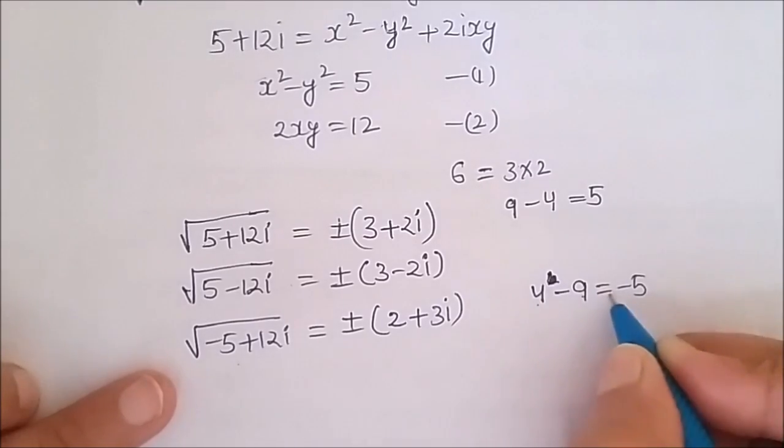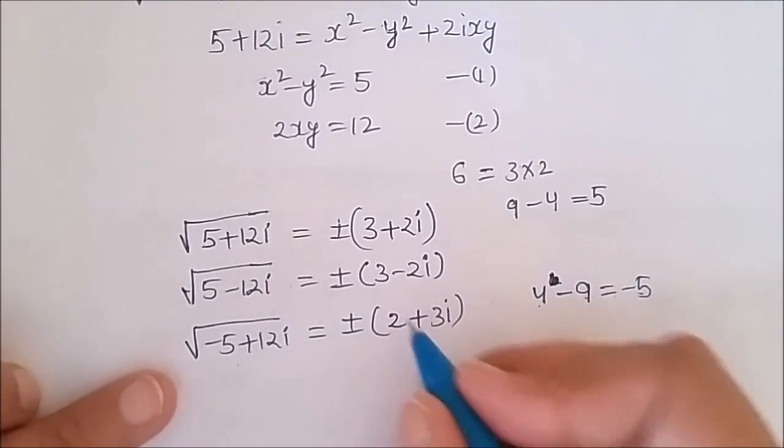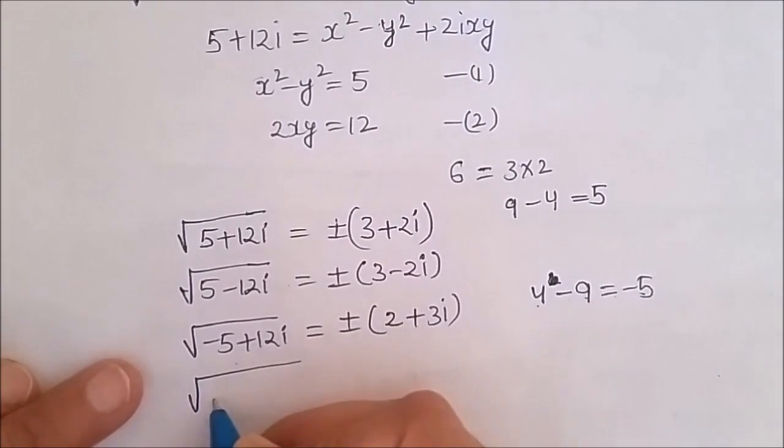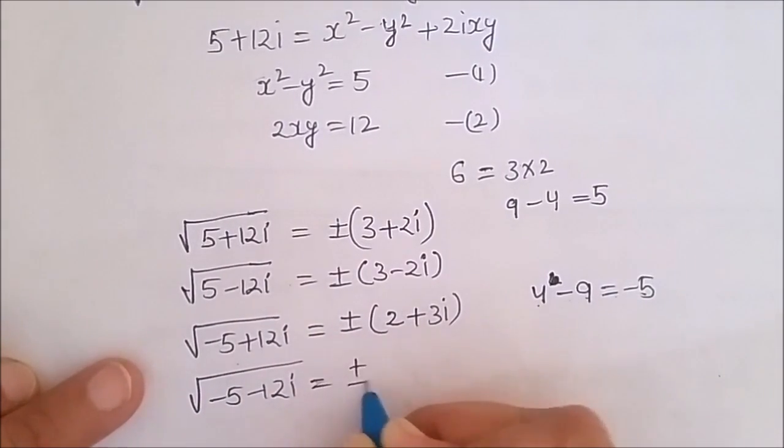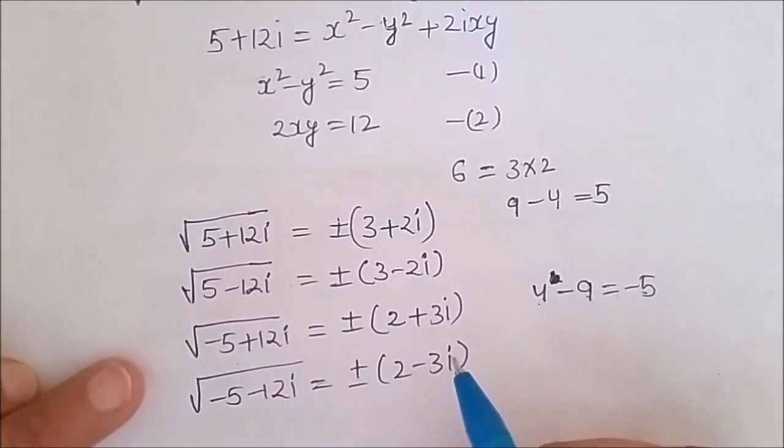So this is the answer. If I have a complex number minus 5 minus 12 iota, then the answer will be plus minus (2 minus 3 iota). If you find it helpful, please like my video.